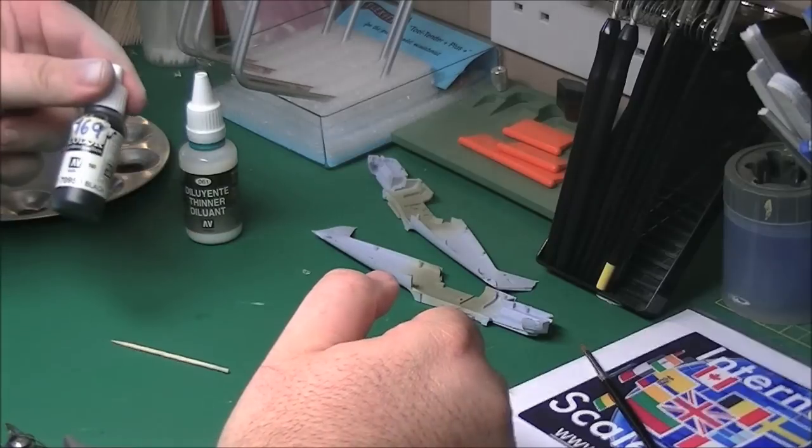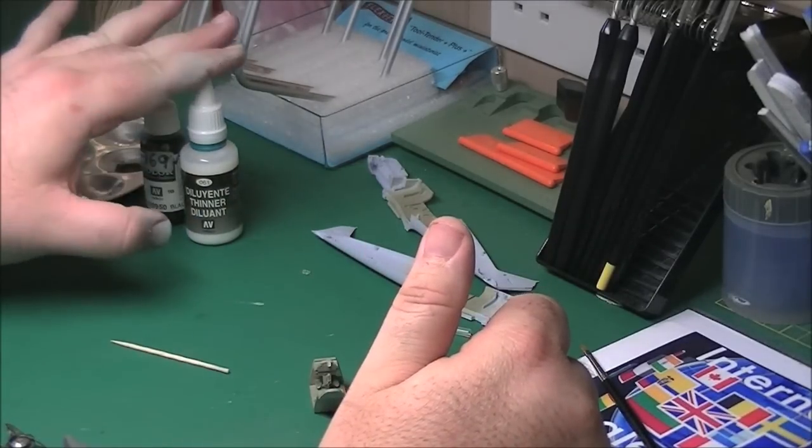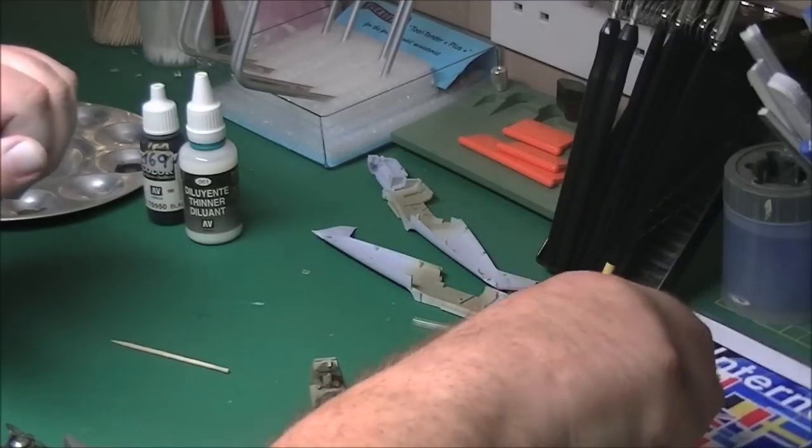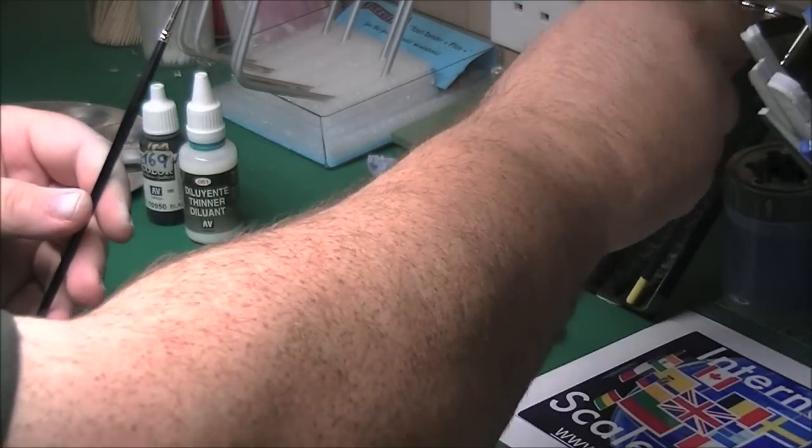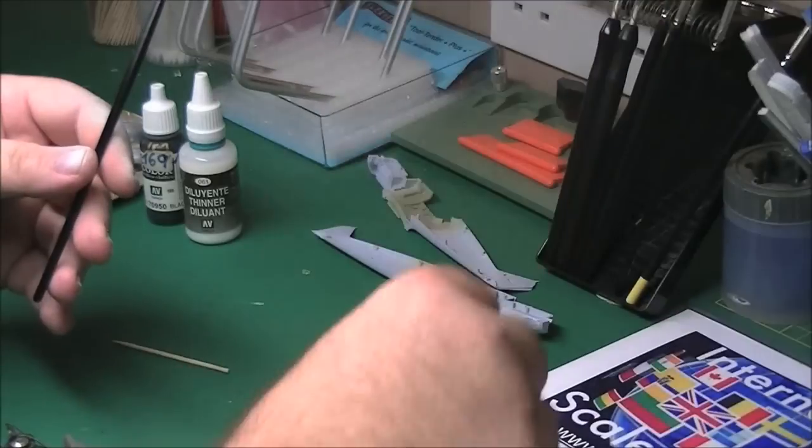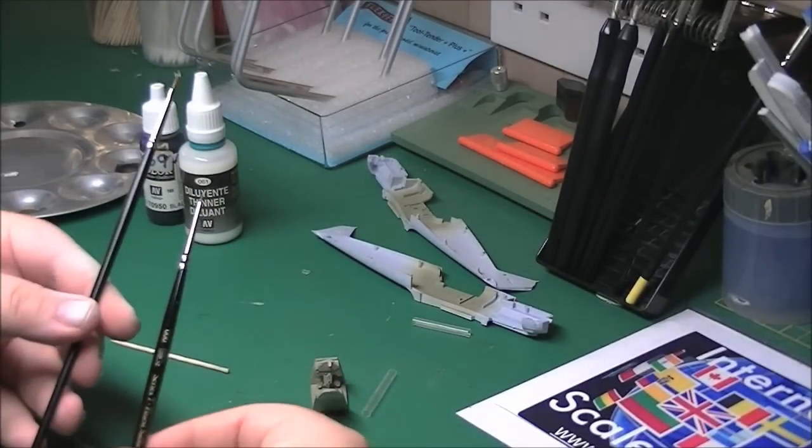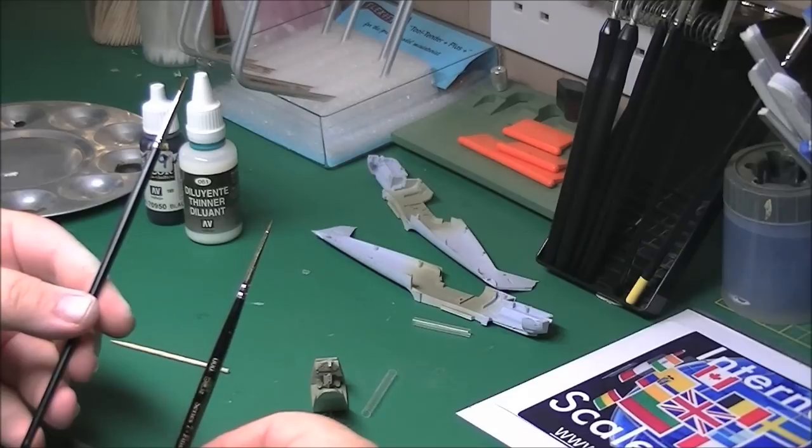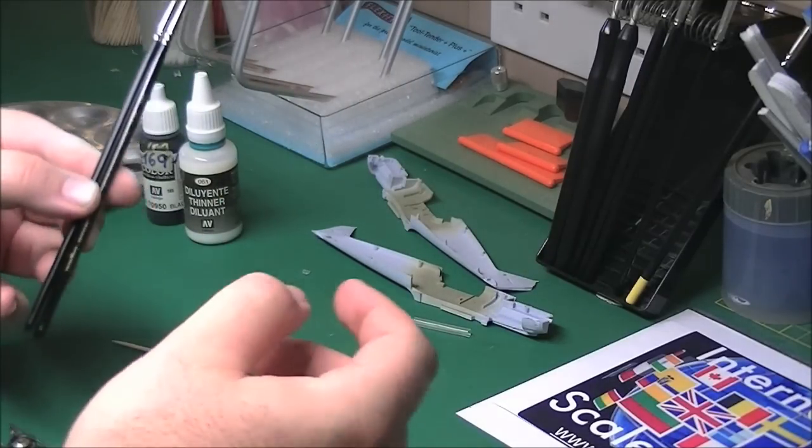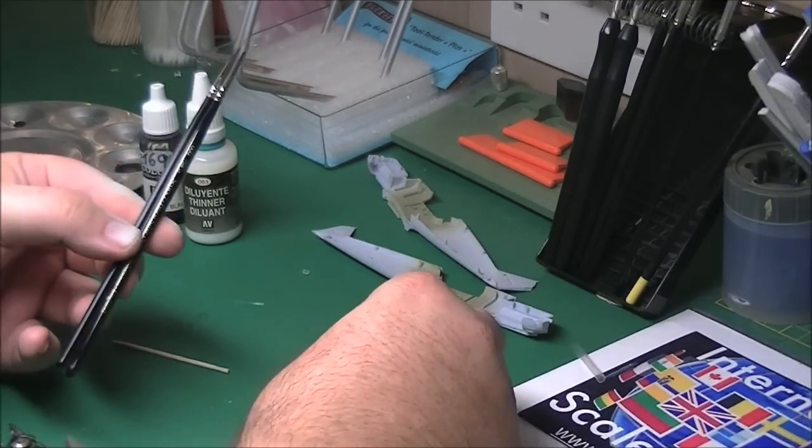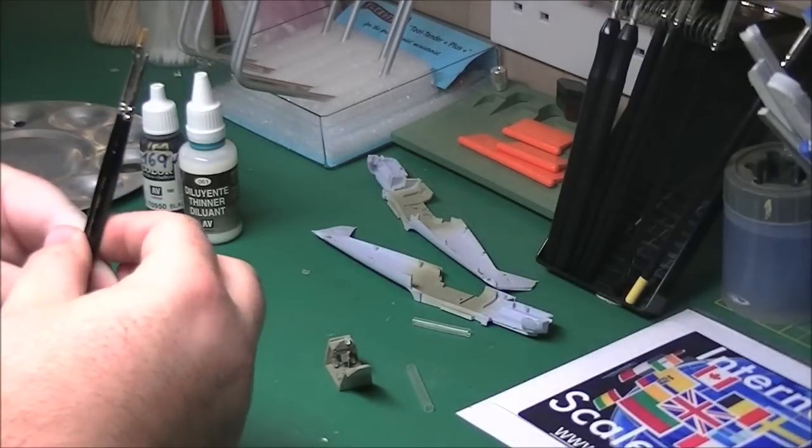So for that we're going to use Vallejo's black, which is position number 169 or 70950. We'll mix that with a bit of their thinner. I'm using a Tamiya flat brush and one of my Series 7 Windsor Newtons. That one. It's a very fine detailed brush. The camera will focus. There we go. Sorry about the pigeon outside as well. Lots of collared doves are the same. We'll paint that cockpit instrument panel black and then I'll do all the other bits and we'll come back once that's done.